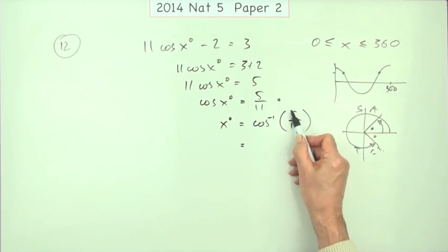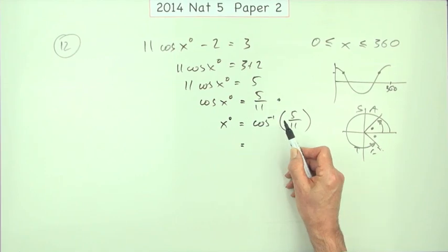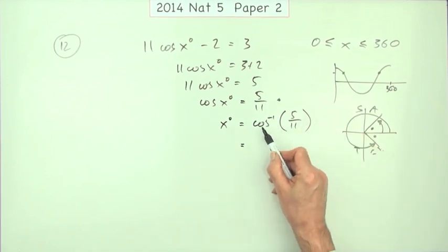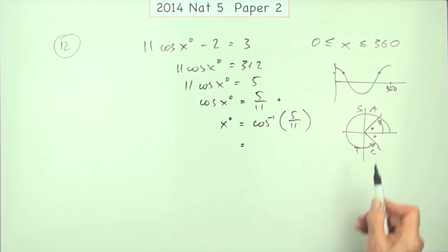And what is that acute angle? Well you just take the actual value here. If there had been a negative you'd have ignored it. You'd have done inverse cos of the actual value itself and let this diagram tell you where to put it.